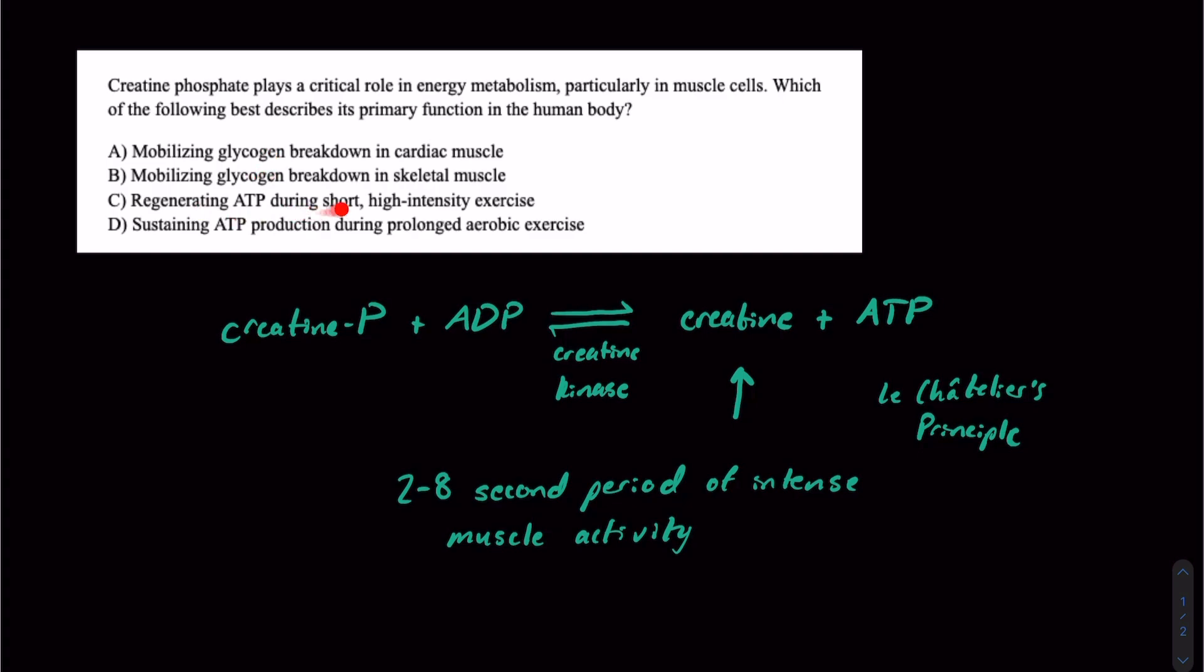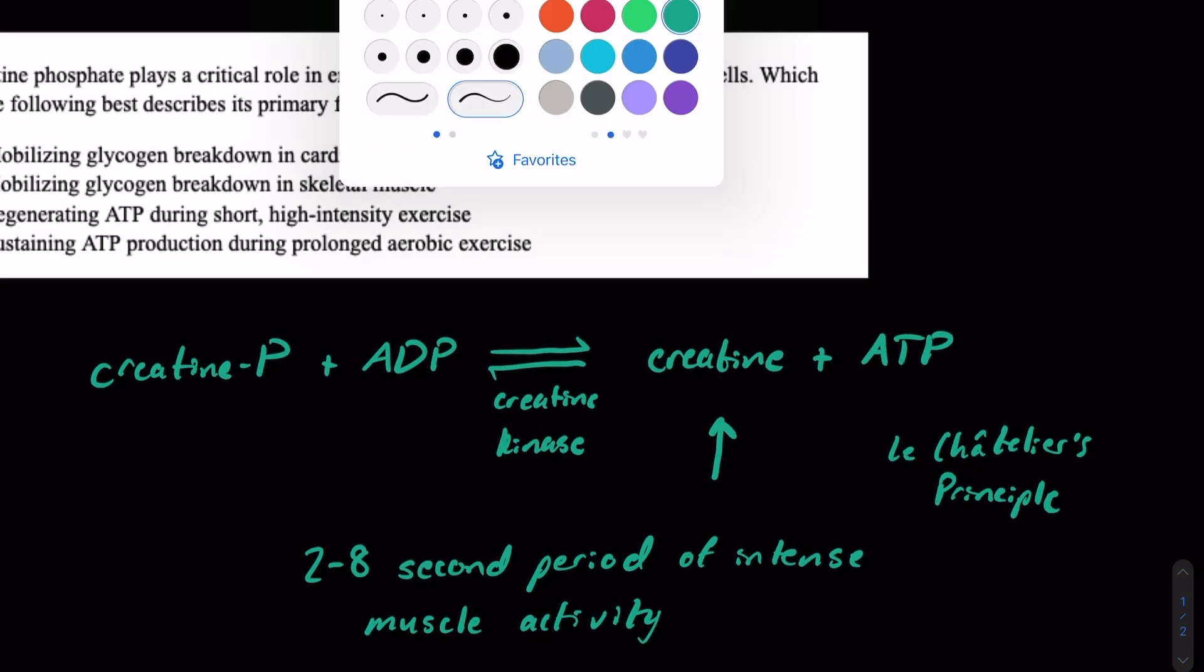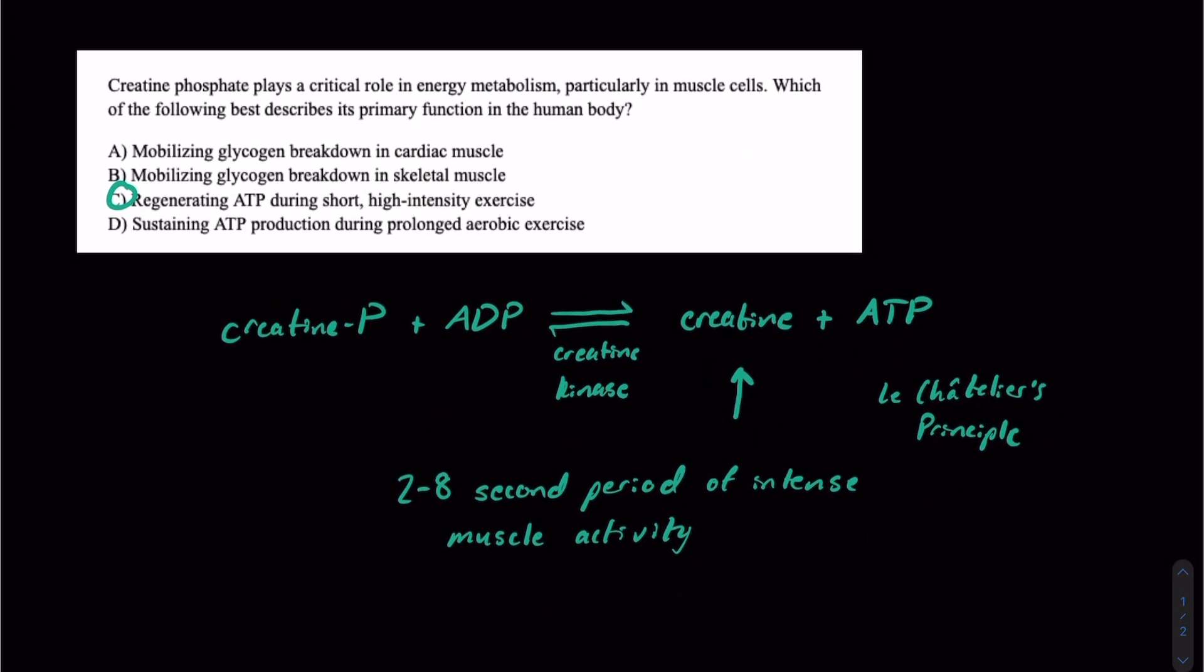we're generating ATP during short, high-intensity exercise. That's exactly what's going on. It's going to be this left-to-right function of creatine phosphate going to the right over here to make creatine ATP. That's going to be what's actually happening during short, high-intensity exercise.